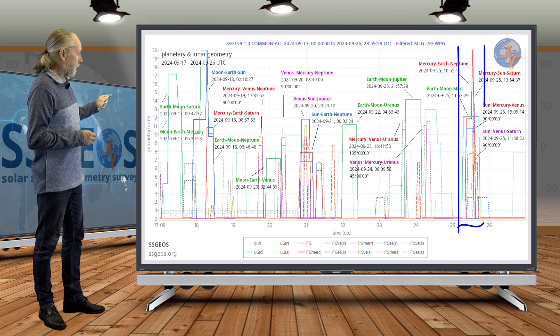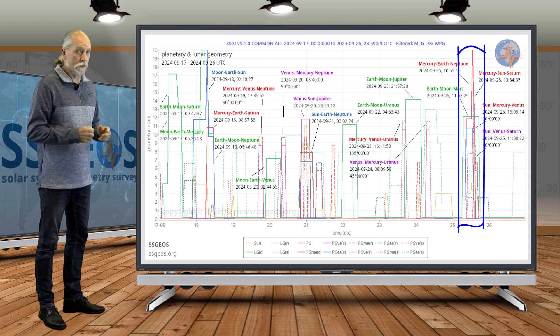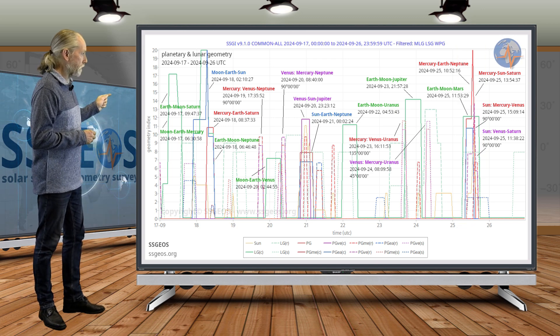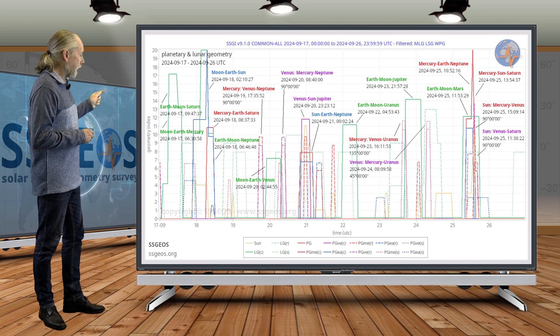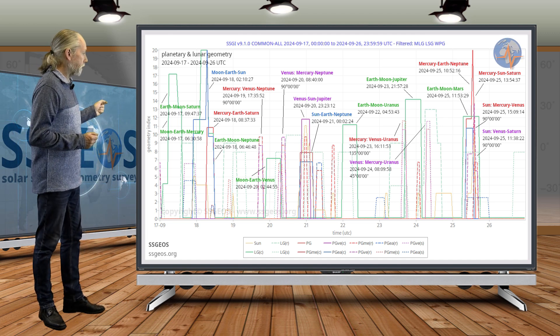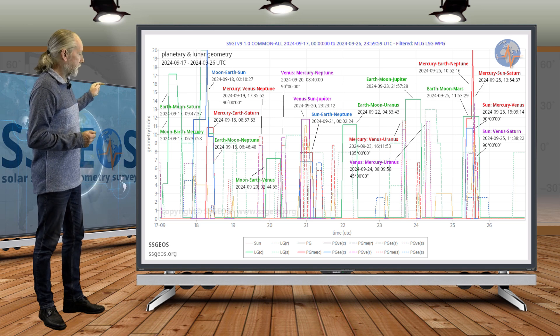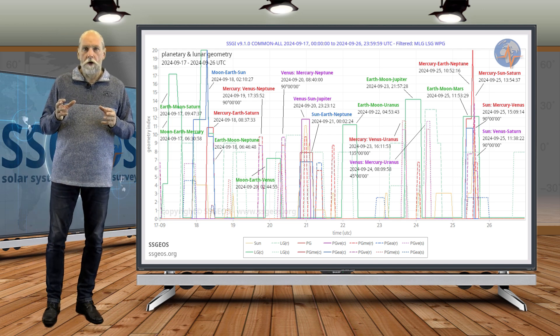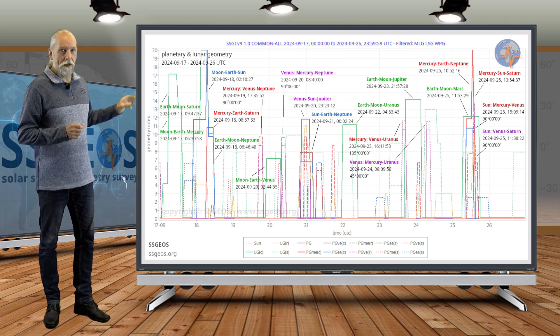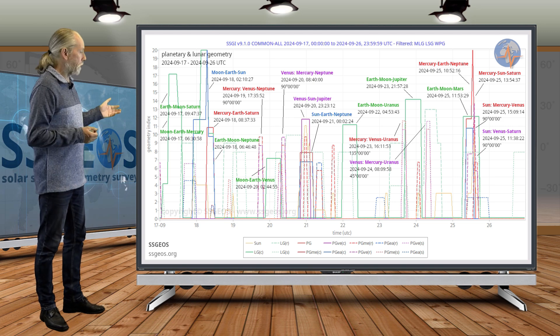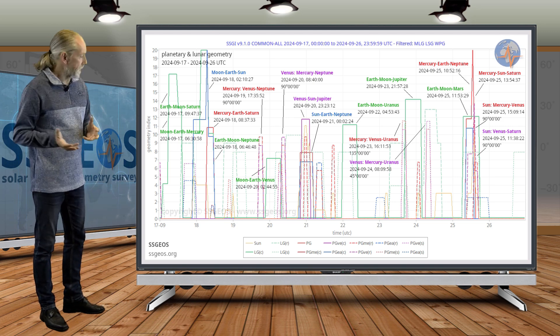And then we have on the 25th also an interesting and possibly critical convergence coming up. That will be Mercury, Earth, and Neptune in a conjunction and Earth, Moon, Mars in a conjunction. So the lunar geometry is converging there with the planetary geometry. And also Mercury, Sun, Saturn and in right angle geometry, Sun, Venus, Saturn. So again, the Sun will be involved there on the 25th. But I will do an additional update covering that planetary geometry because we don't know what's going to happen in the coming days.